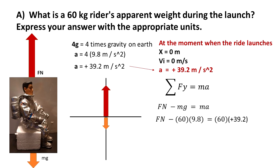M was given as 60 kilograms, gravity is 9.8 meters per second squared, and the acceleration that we found, 39.2 meters per second squared. So we get that FN minus 588 newtons is equal to positive 2352 newtons. I add to the other side, and we found that the normal force is equal to positive 2940 newtons.